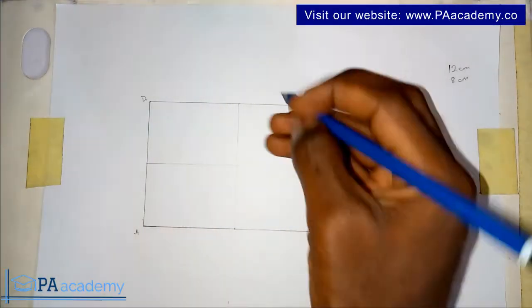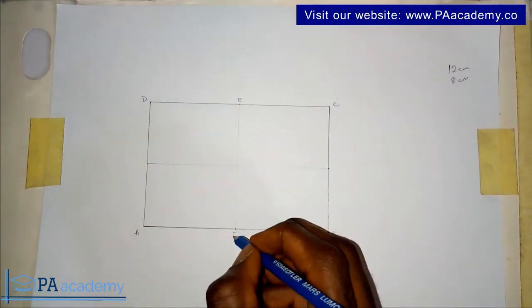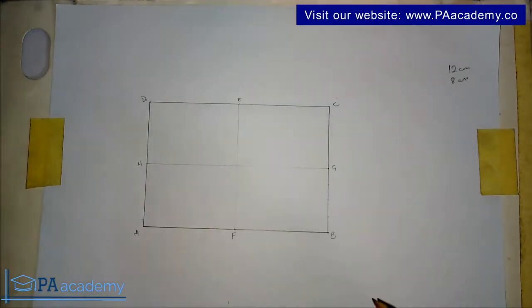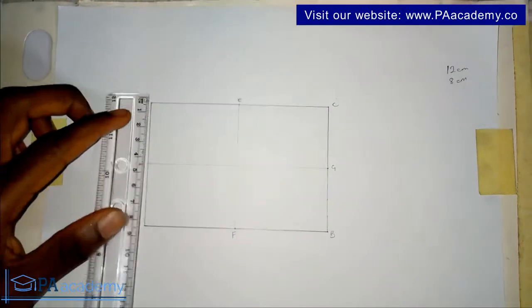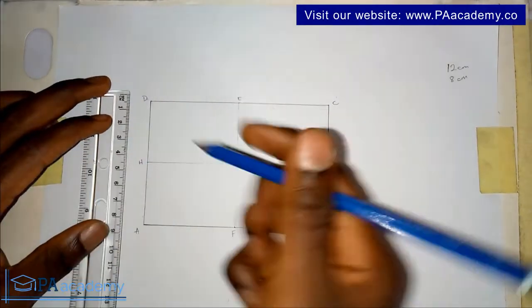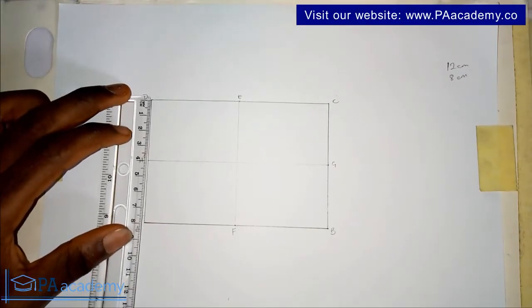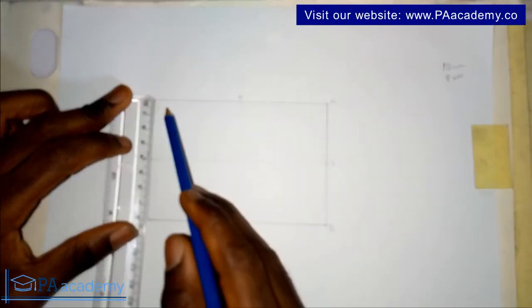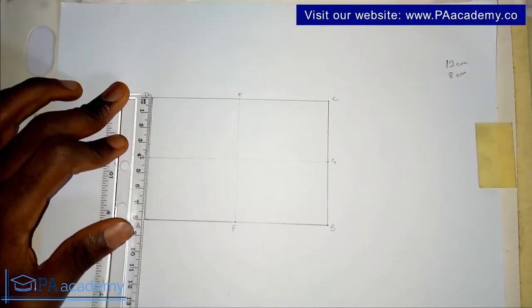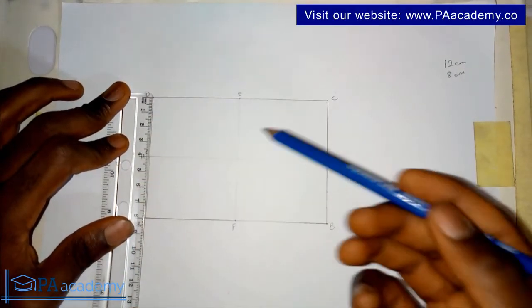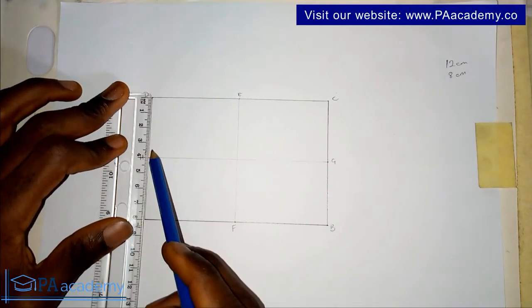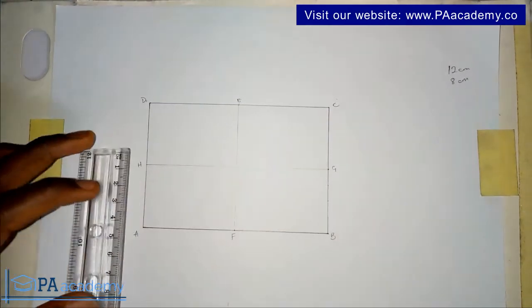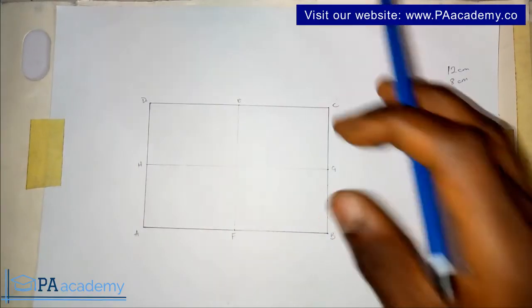Let me note all those points. I'll call these points E, F, G, and H. Now bring in your ruler. On line DH, I have 4 centimeters, so what you are going to do is divide it into four equal parts. Then come over here and also divide it into four equal parts. You are going to repeat the same thing on the remaining two sides.